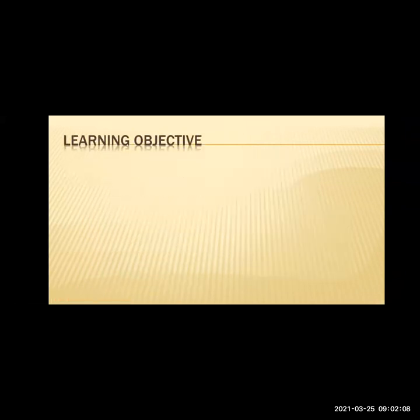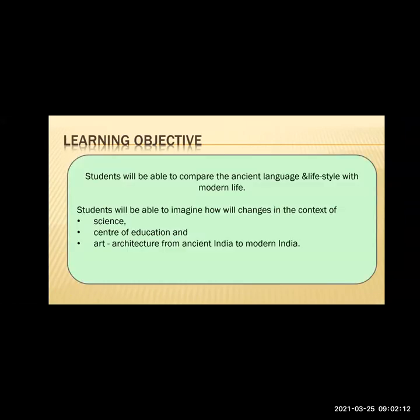So what are the learning objectives? You will be able to compare the ancient life and lifestyle with modern life — ancient means old, and modern is new. You will also understand how changes came about, learn about science, which were the centers of education, and come to know about the art and architecture from ancient India to modern India.